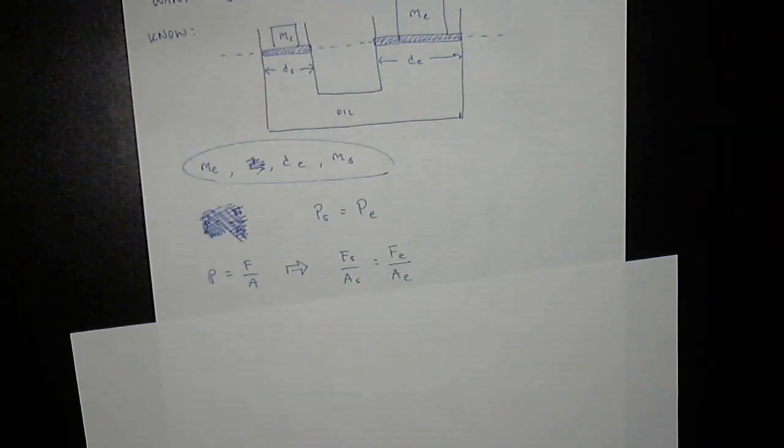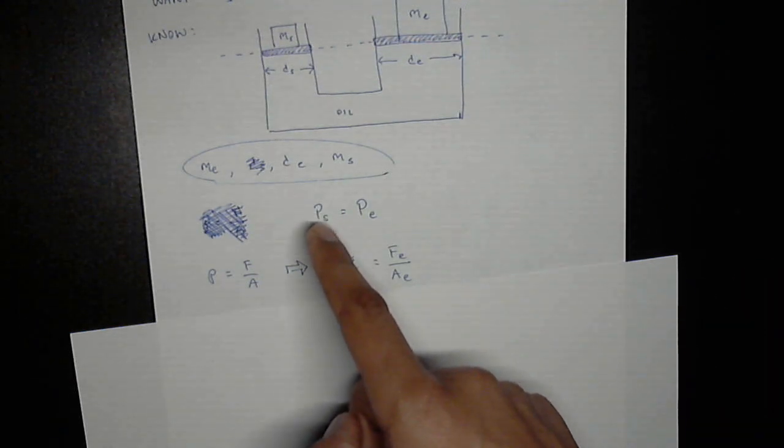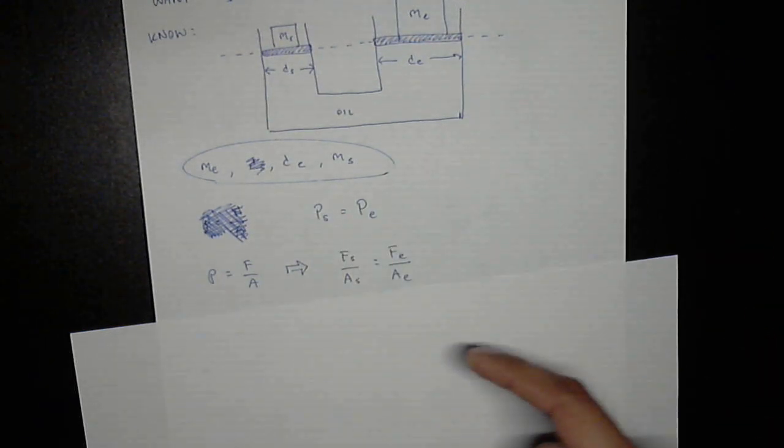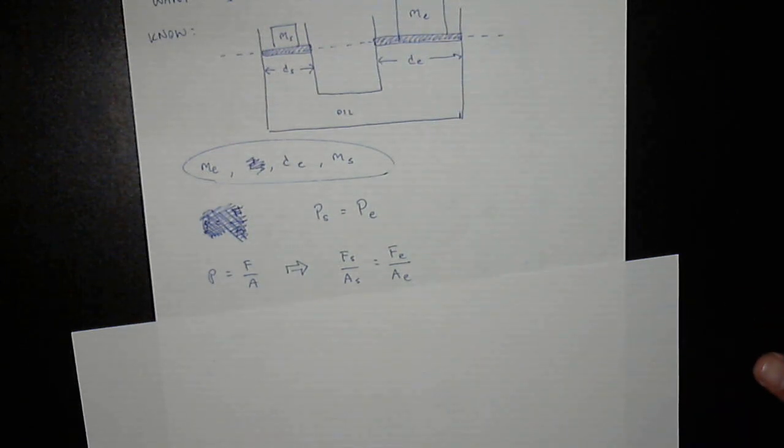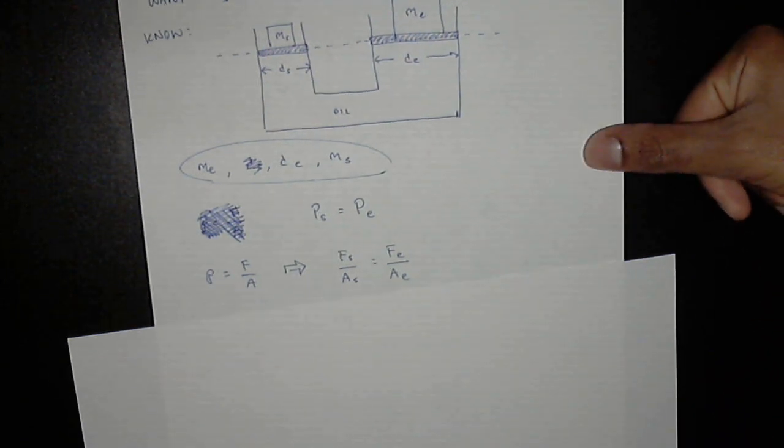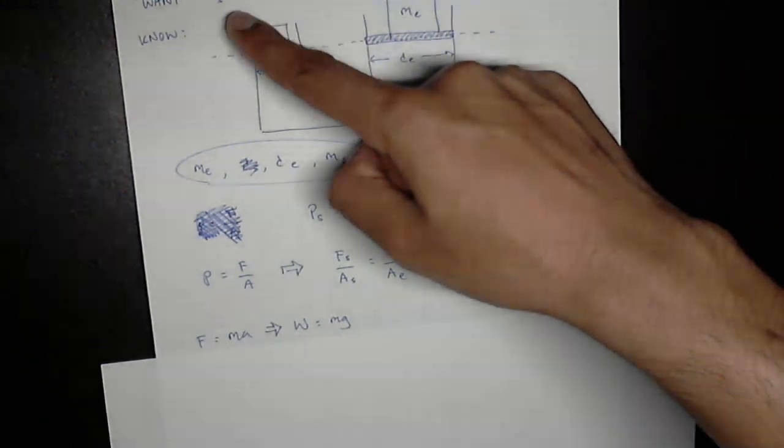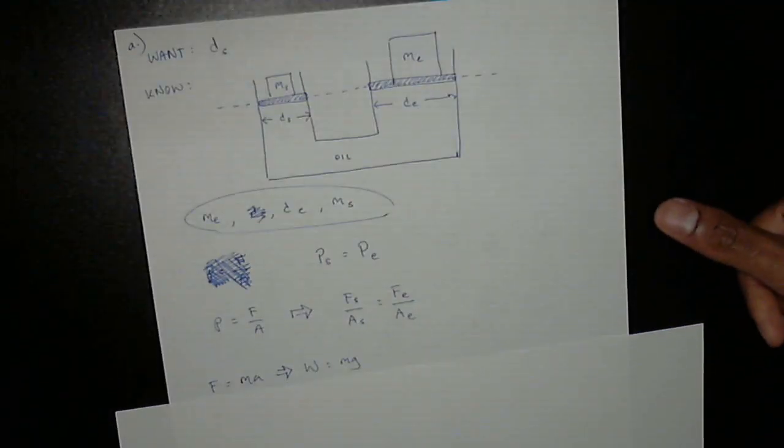So we know pressure is equal to force over area, so we can say that if the pressure of the student is equal to the pressure of the elephant, we can say that the force of the student over the area of the student is equal to the force of the elephant over the area of the elephant's platform. We still don't have ds in here, which is what we want, so let's break it down further.